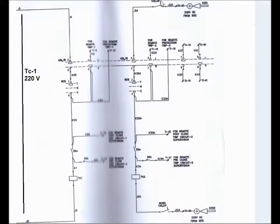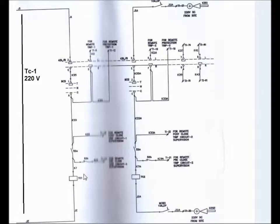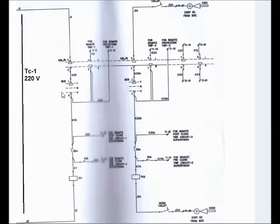There is another 10 ampere double pole MCB, and this MCB must be ON to connect the DC to the trip coil. For local tripping via TC1, the local-remote selector switch must be in local position. If we give the tripping pulse from the local control switch, the pulse will come to trip coil TC1 via the auxiliary contact of the circuit breaker.